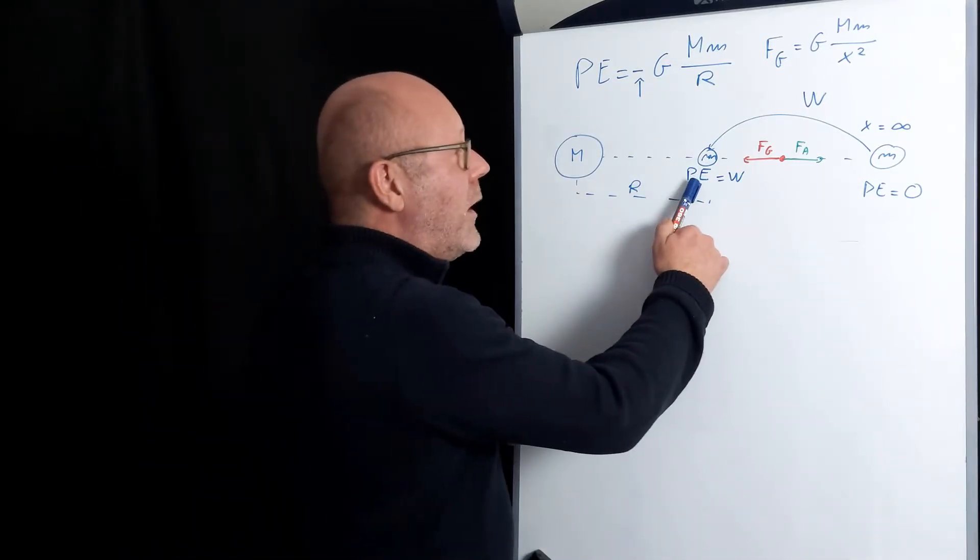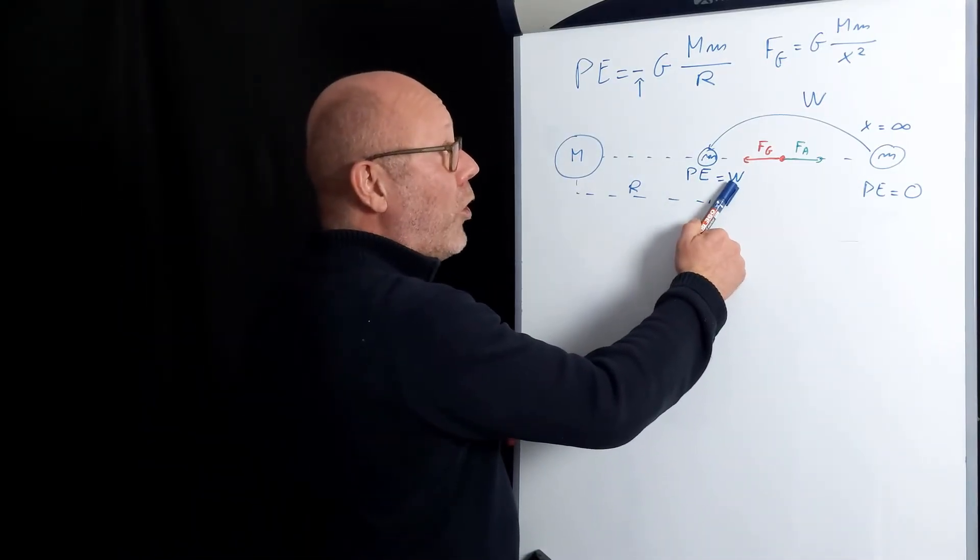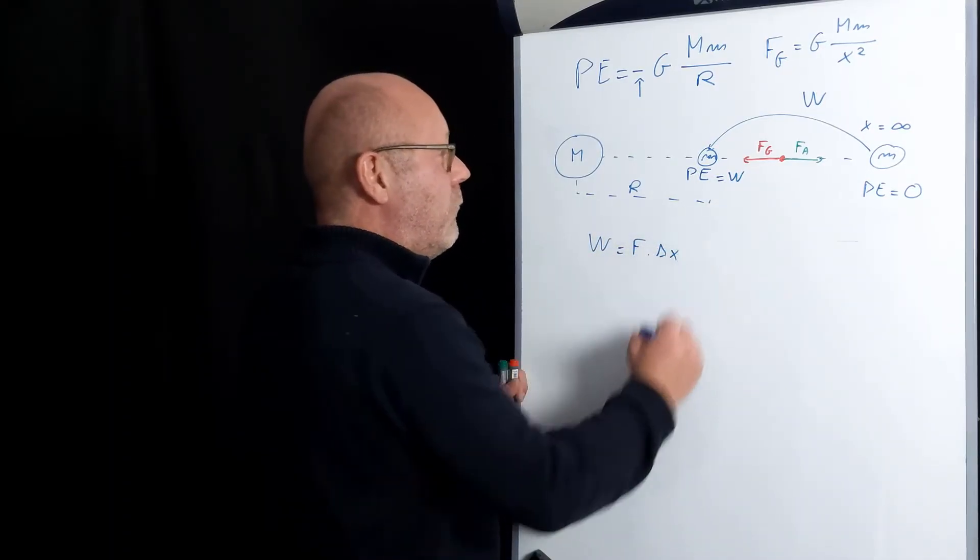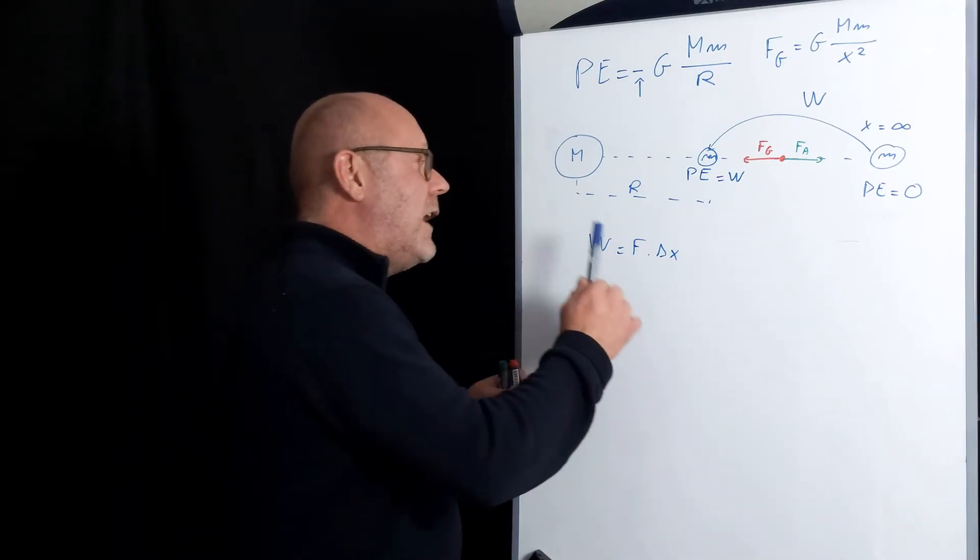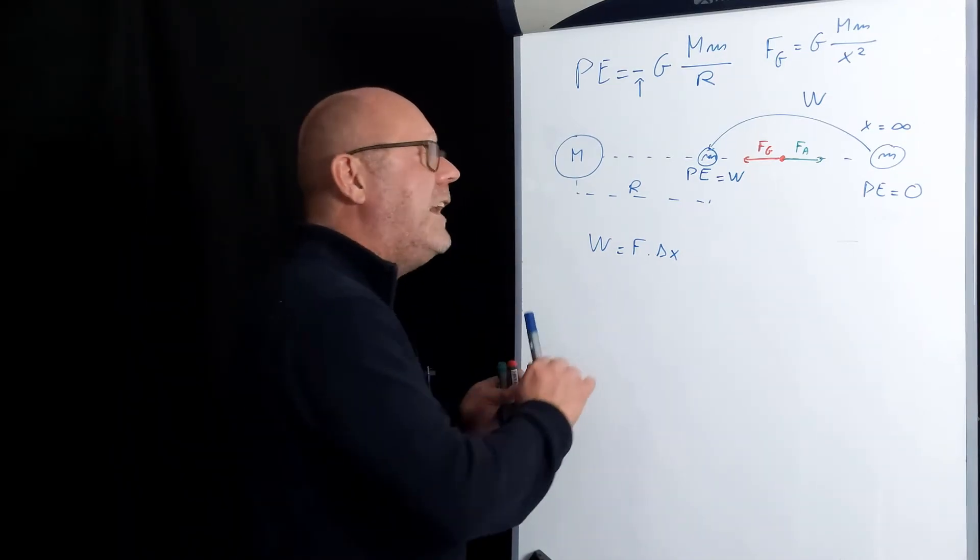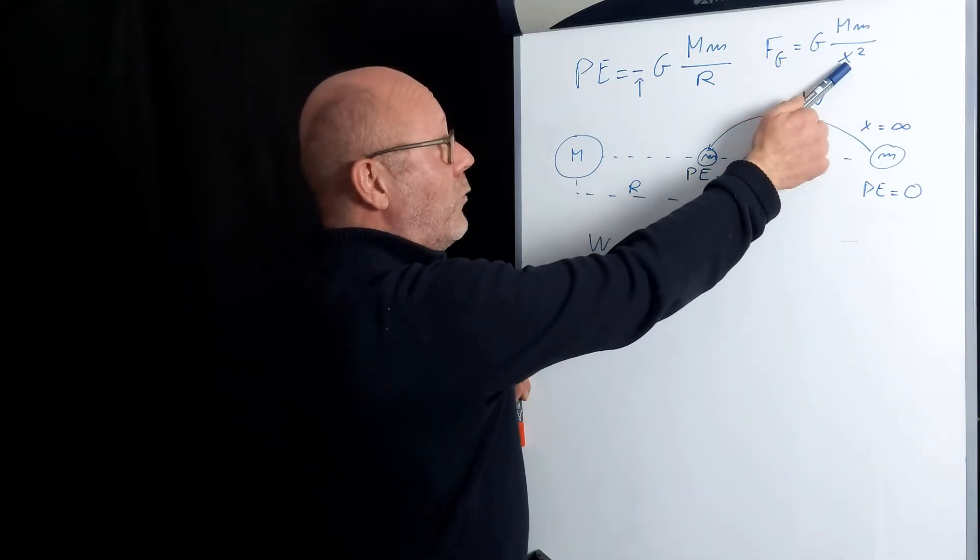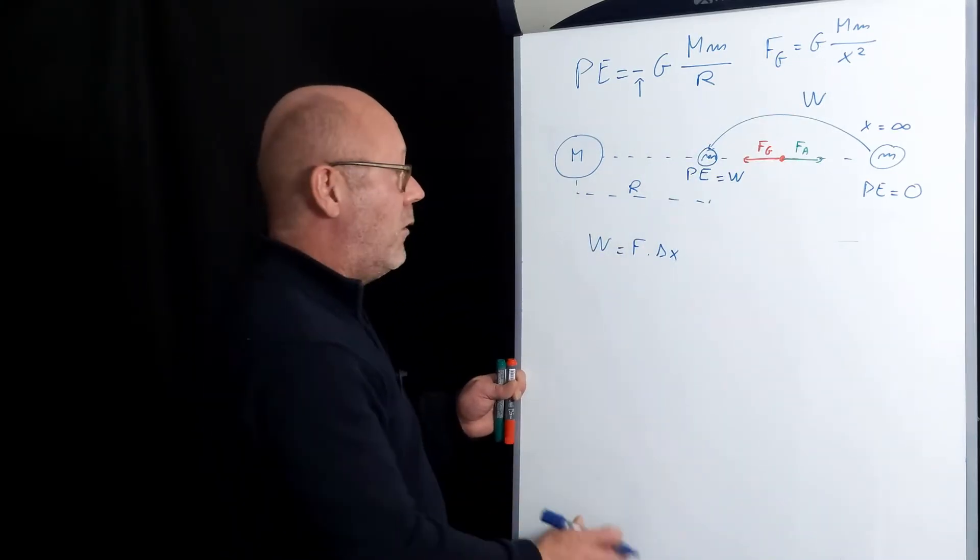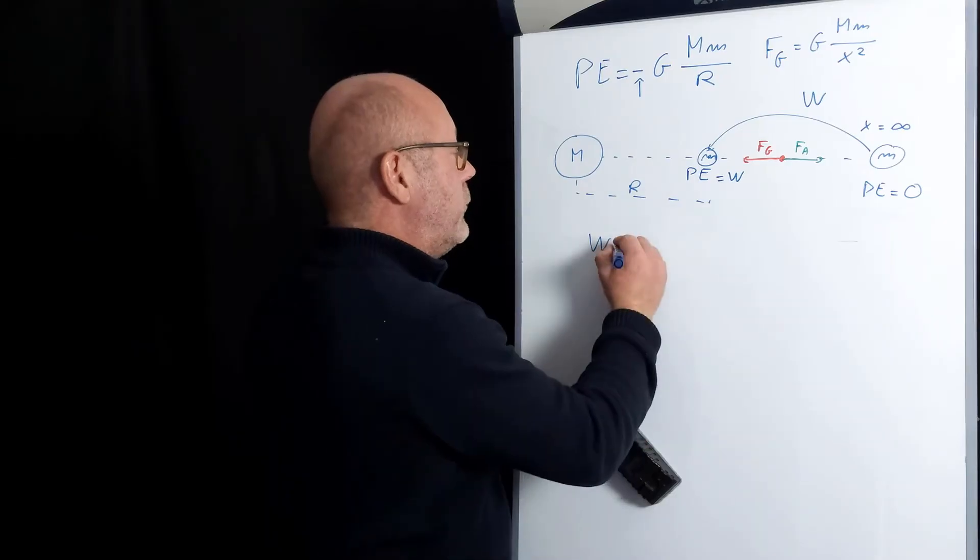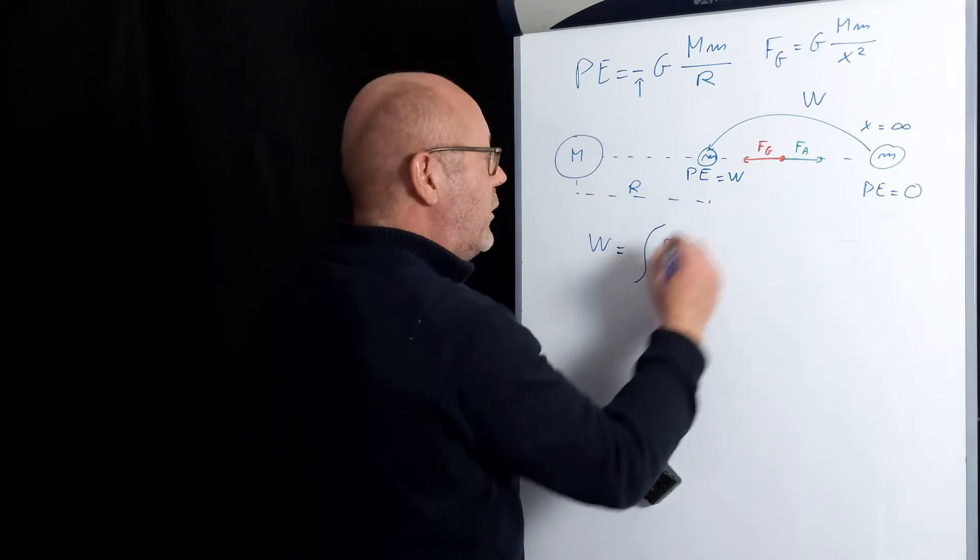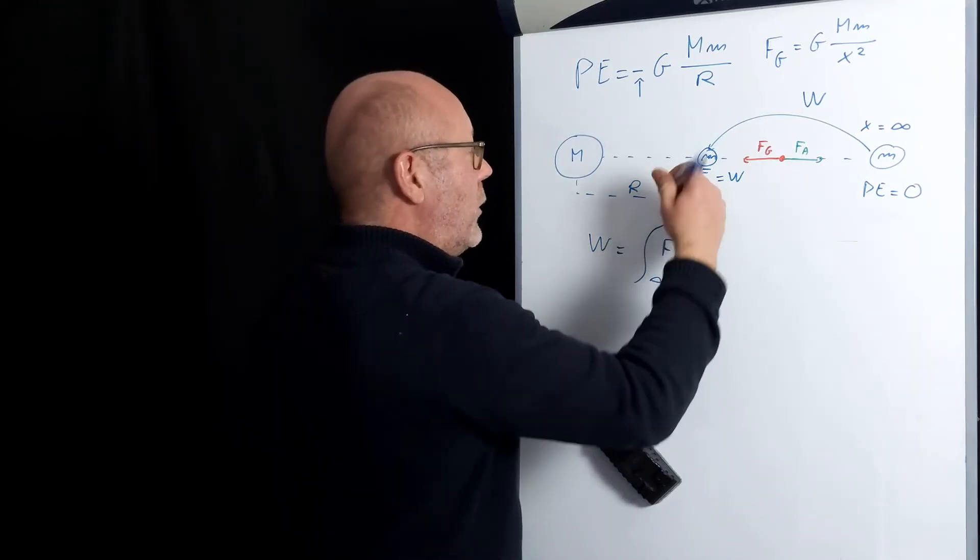I want to calculate the potential energy here, so I just need to calculate the work. So I would say work is force times displacement, right? Huh, wrong. Because in that situation, the force changes with the position. There you see, the applied force needs to be equal to the gravitational force. So I need to integrate from initial position to final position.